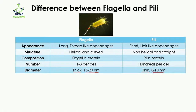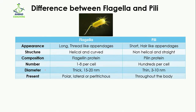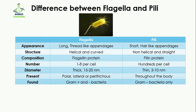Flagella are present on the poles, laterally, or peritrichously — peritrichous means they are present all around the surface of the bacteria. Pili, on the other hand, are present throughout the entire body of the bacteria, as you can see they are found everywhere on the bacterial surface.